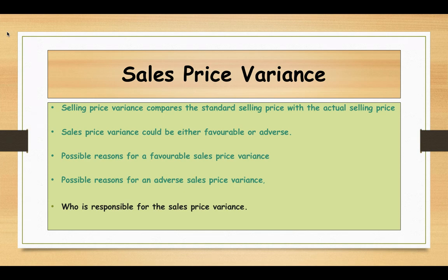Now we'll see who is responsible for the sales price variance. Generally the sales division is responsible, but not always. For example, if the production department produces poor quality products, the responsibility lies on the production department. Or if there is a government regulation preventing price increases, that situation is beyond the control of the sales division.